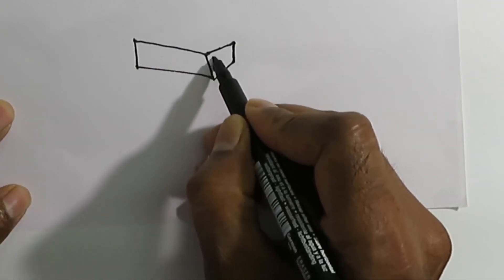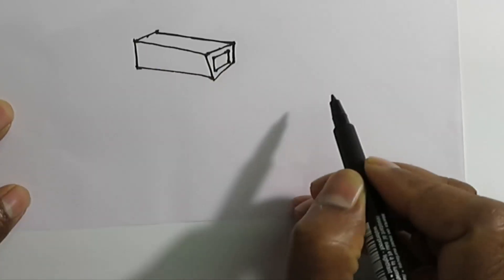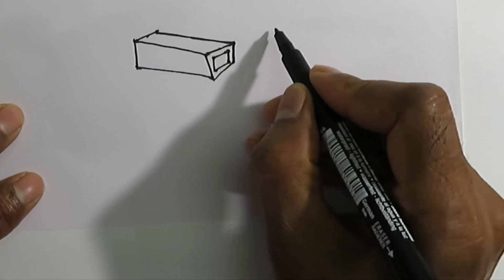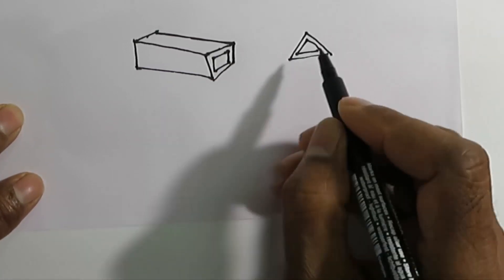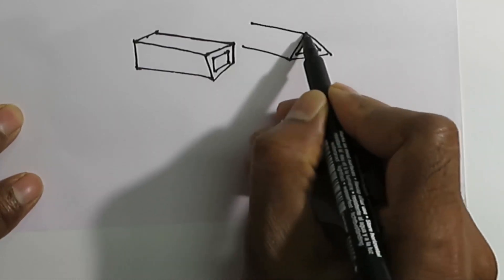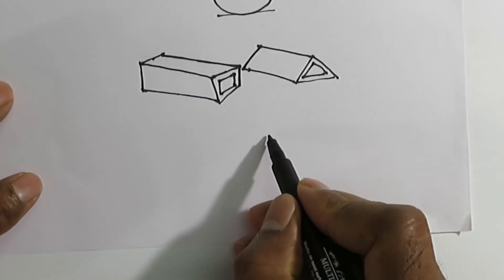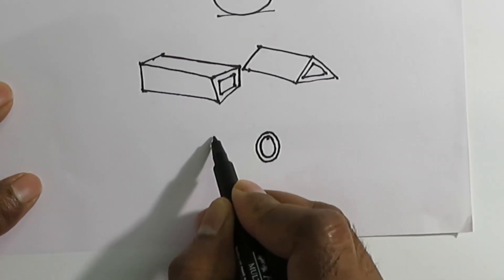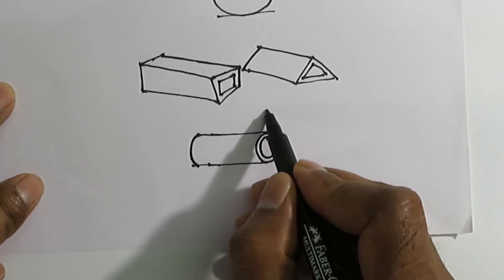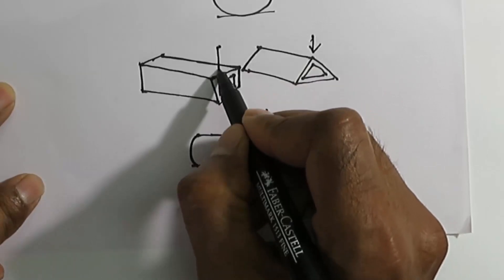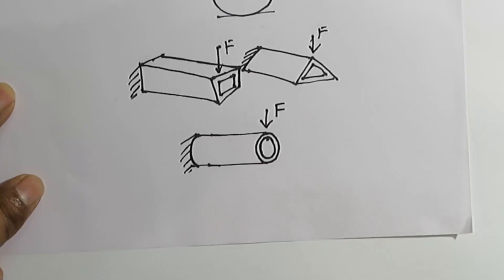If we consider solid objects then the triangle and circle may be seen as triangular prisms and cylinders respectively. The triangular prisms and cylinder will be better load bearing components than the square or rectangular boxes.